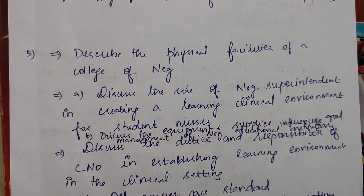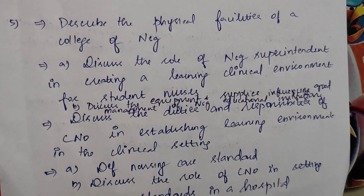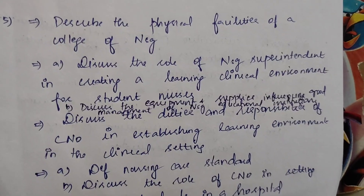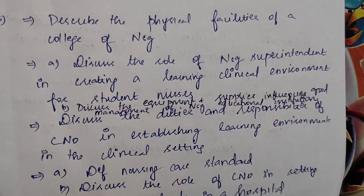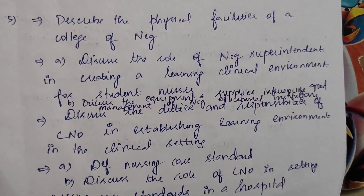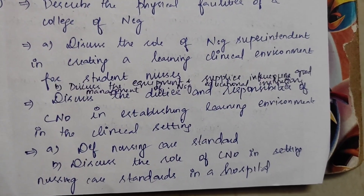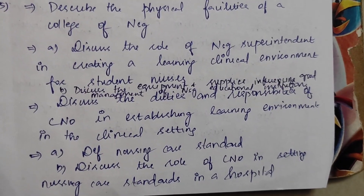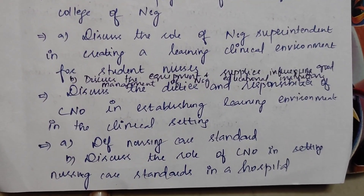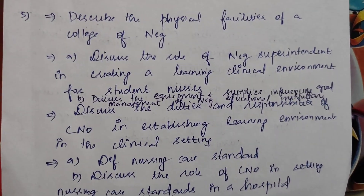Next, describe the physical facilities of a college of nursing. Discuss the role of the nursing superintendent in creating a learning clinical environment for student nurses — options A and B, 15 marks. Discuss the equipment and supplies that influence good management of a nursing educational institution. Also, discuss the duties and responsibilities of a clinical nursing officer in establishing a learning environment in the clinical setting. Overall, these questions are similar.